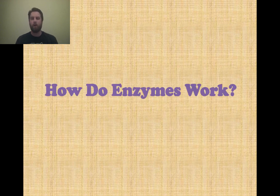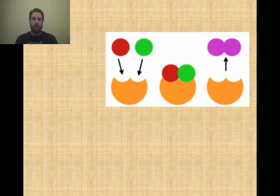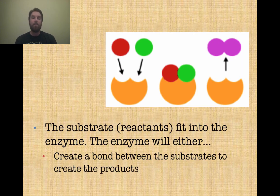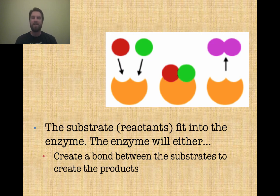So how do enzymes work? If you look at this diagram, you've got substrates binding to the active site, and when the substrates, or the reactants, bind to that enzyme, they come out as something different. You had two different reactants — a red and a green circle — binding to the enzyme, and once they unbind they are a larger purple molecule, indicating they are something different. They enter as reactants, the reaction happens, and they leave as products. What I want to draw your attention to is that the enzyme itself, the orange part, does not change at all. Enzymes speed up a reaction, but they themselves are not changed in any way.